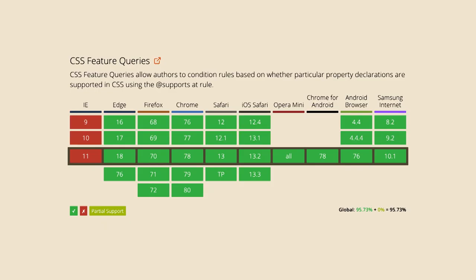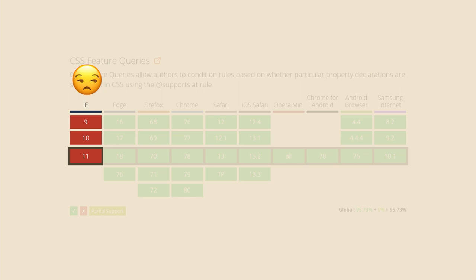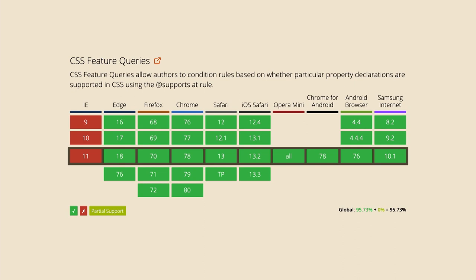And even in 2019, feature queries are really, really well supported — it's like almost an entire sea of green. Except for one particular browser that we will not name. You know things are bad when Opera Mini supports a feature but Internet Explorer does not. That's pretty bad.